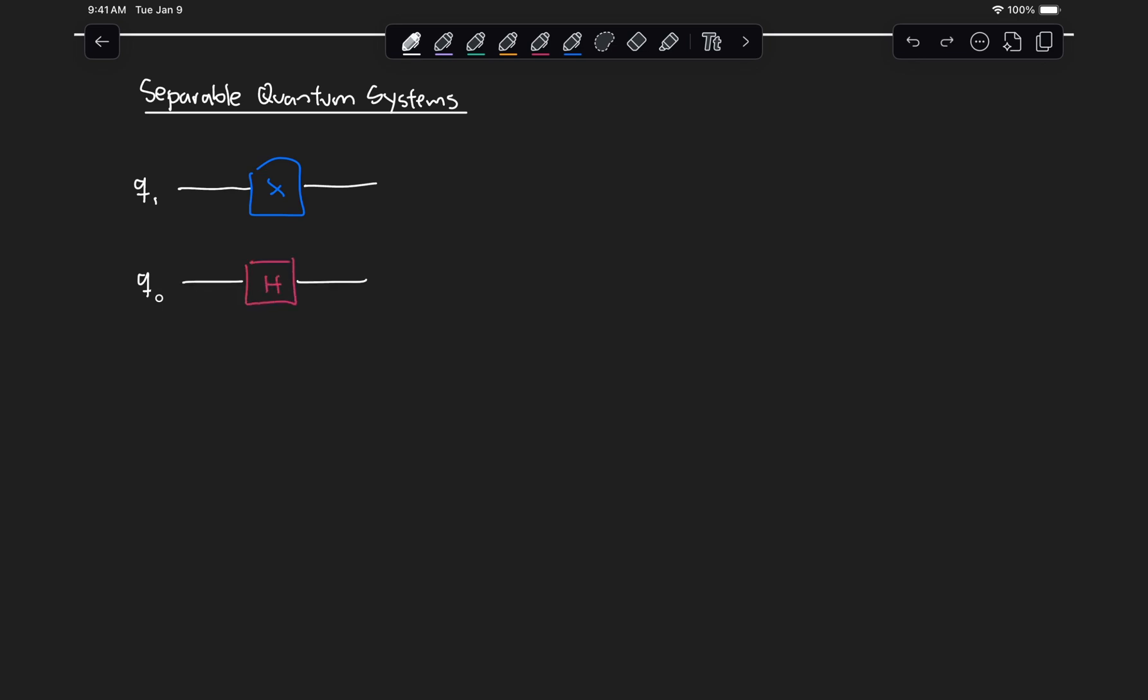Well, the way we describe the state of this total system is by using the tensor product, just like we did with classical systems and with probabilistic systems. So for example, here at t0, if we assume that these two qubits are initialized at zero, what we would have is state zero tensor zero.